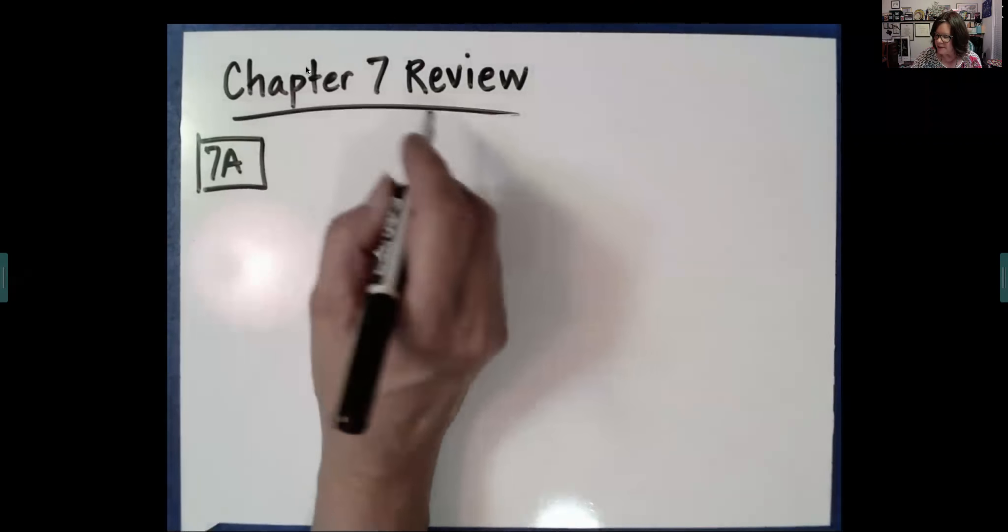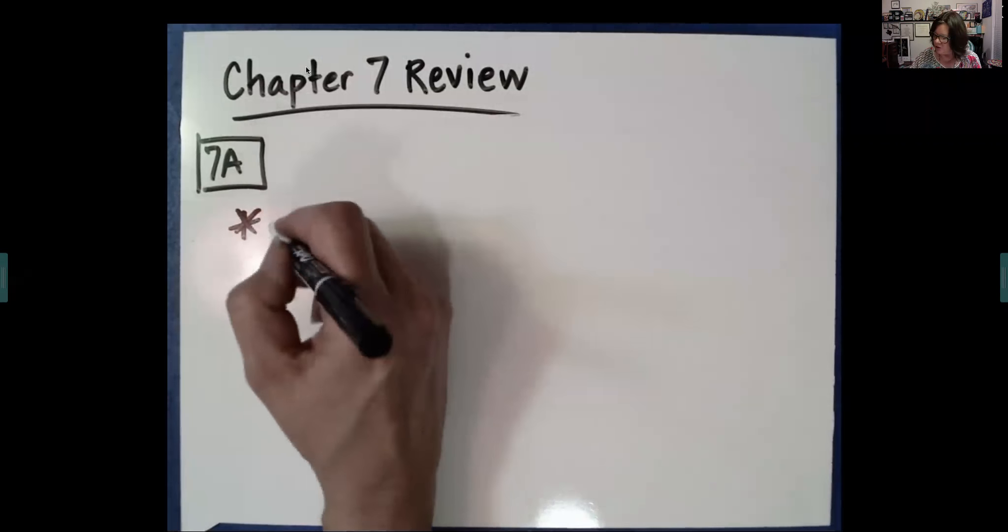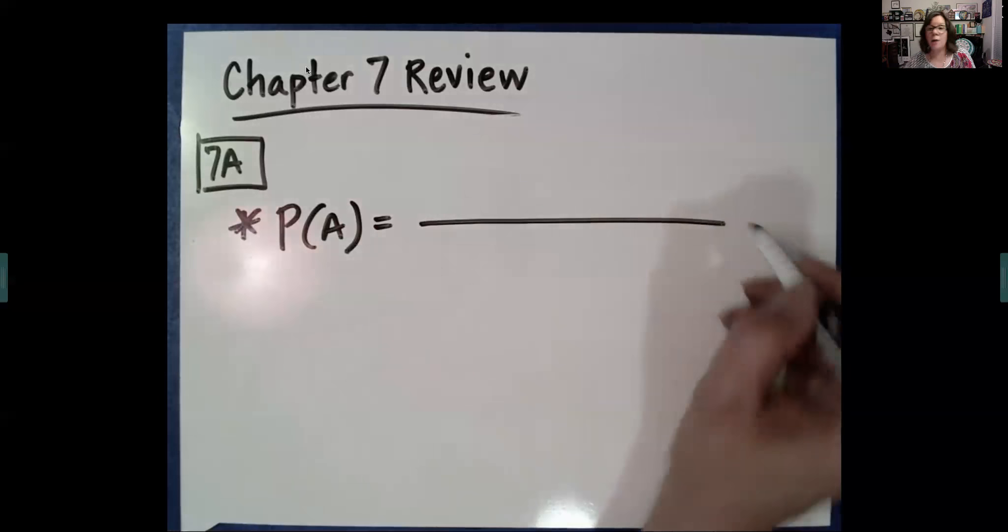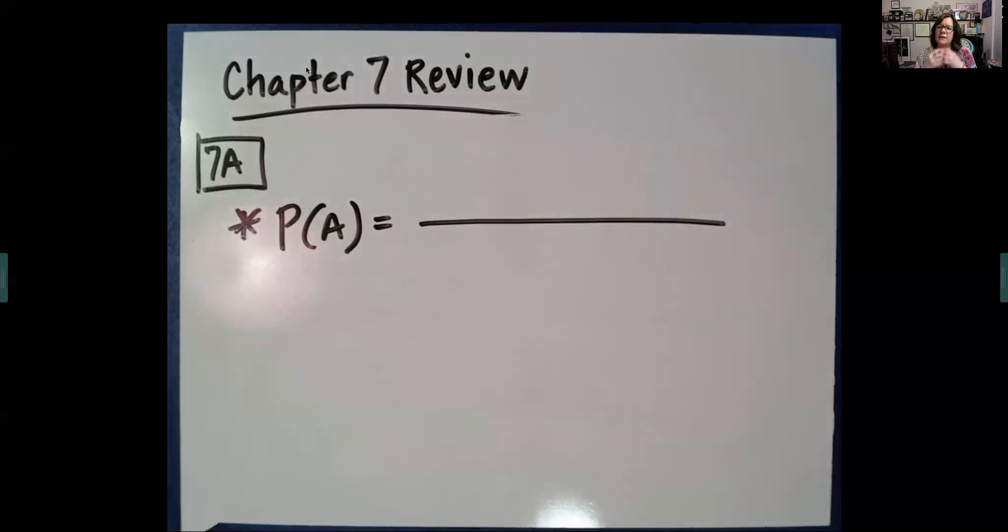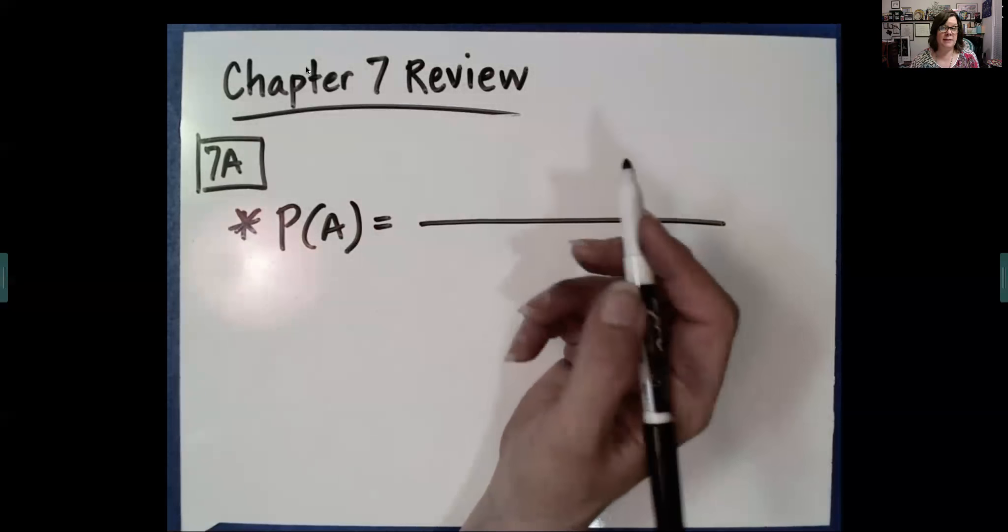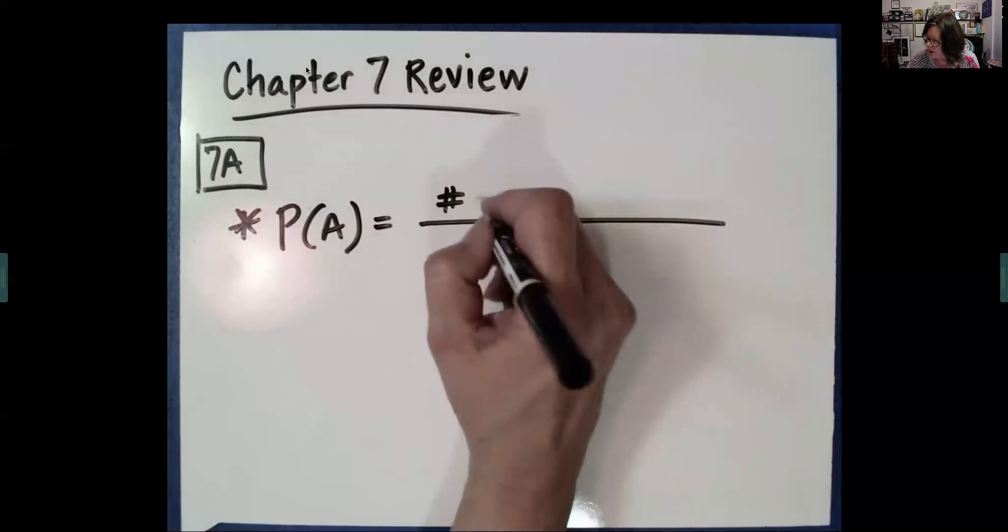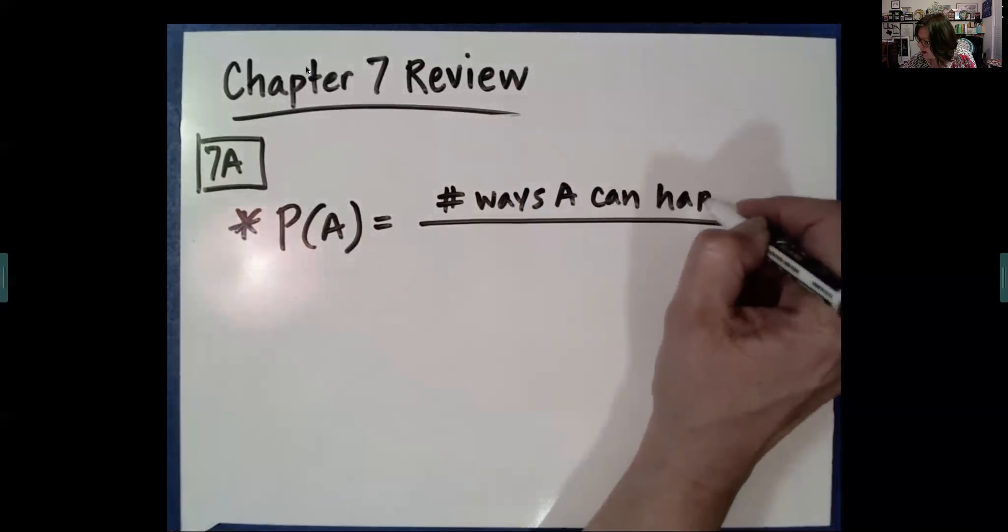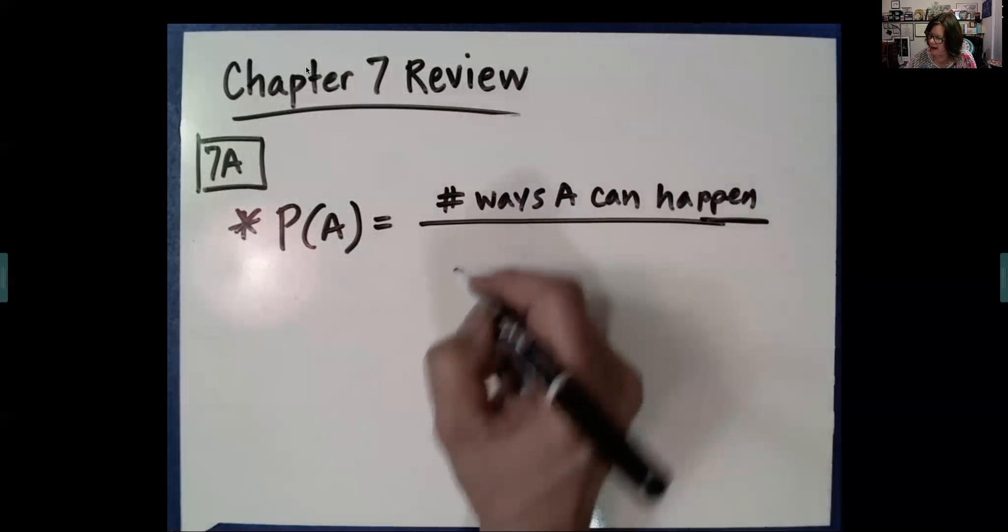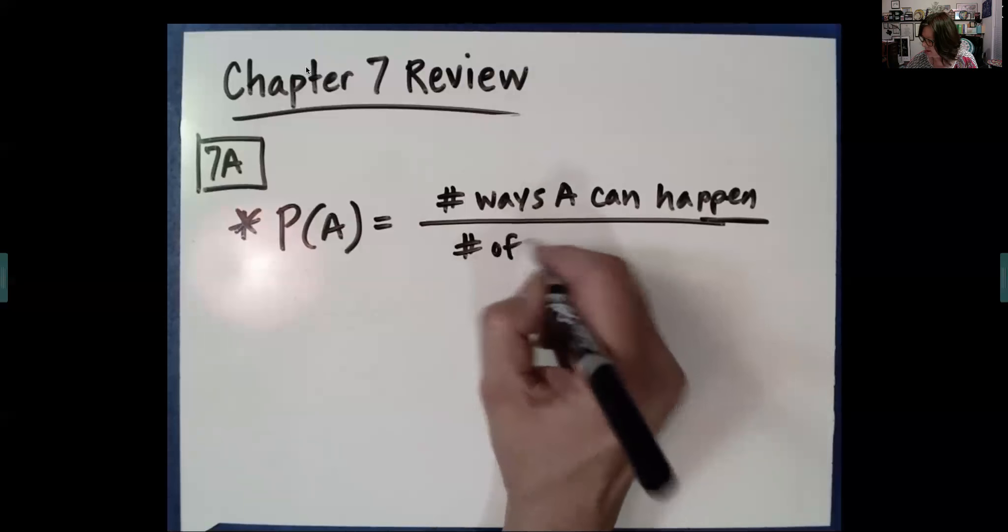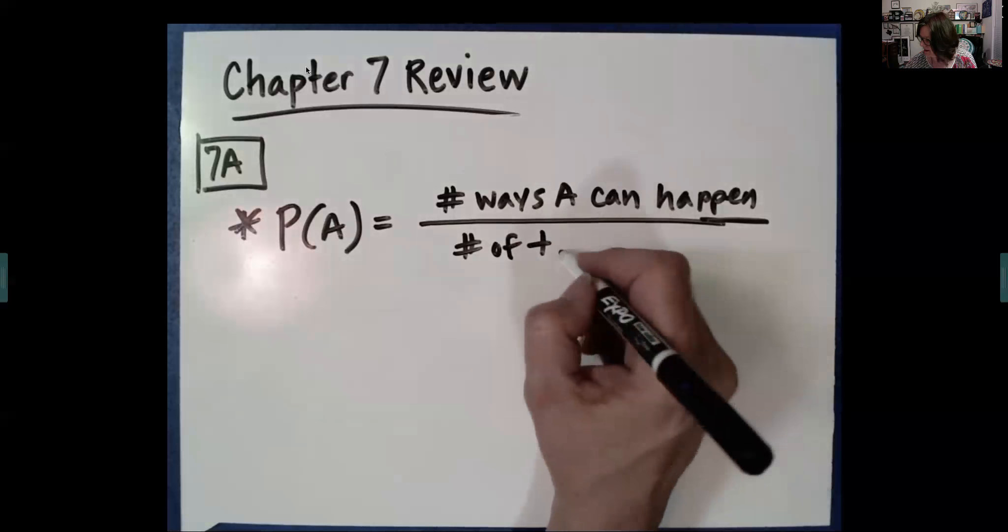Okay, we get our biggest idea in Section 7a, just generally how we calculate probability. Now, there are a couple of types, mostly there are theoretical probability and then experimental, but basically the formula is the same. We want to figure out the number of ways A can happen, the number of ways A successfully happens and divide it by the number of total outcomes or the possibilities of outcomes.